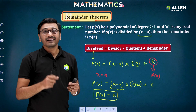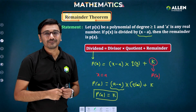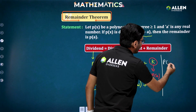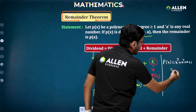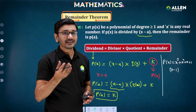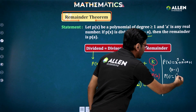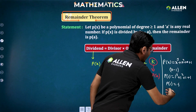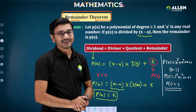So whenever you divide a polynomial by a linear factor (x minus a), the remainder will be p(a). For example, suppose the polynomial is x³ + x² + x + 1 and it is divided by (x minus 1). You don't have to carry out the division — just put x equal to 1. p(1) = 1³ + 1² + 1 + 1 = 4. So the remainder when this cubic polynomial is divided by (x minus 1) is 4.